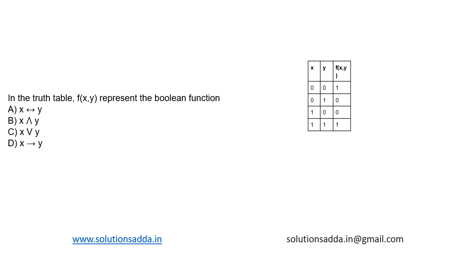This is a question from mathematical logic. In the truth table, f(x,y) represents which of the following boolean function? We are having this particular truth table: when both x and y are zero, we get the output one, and when both x and y are one, we get the output one.